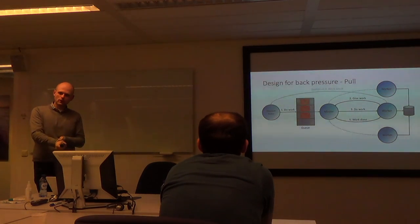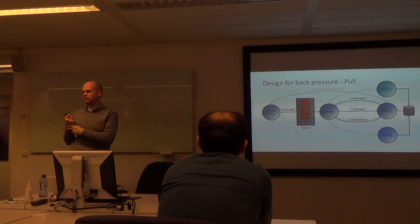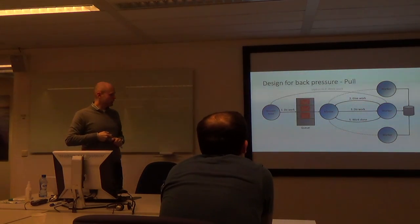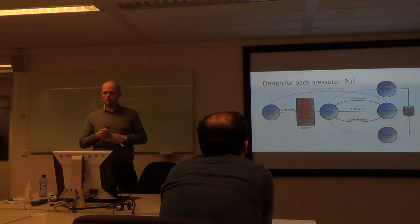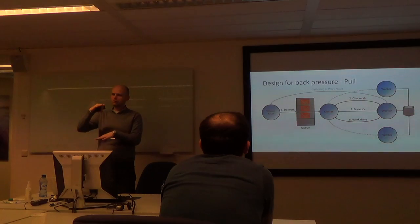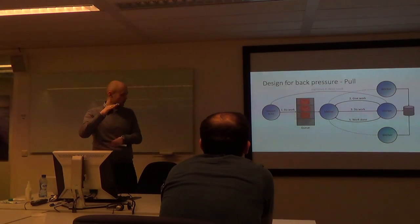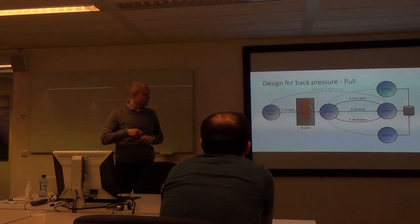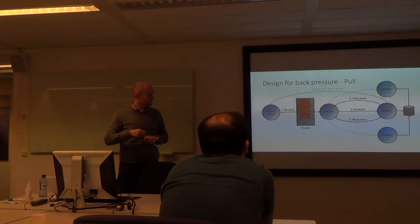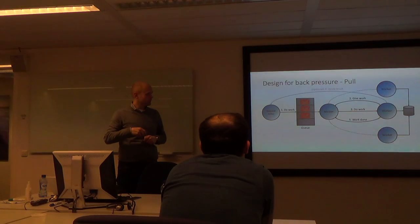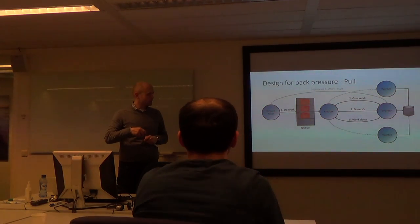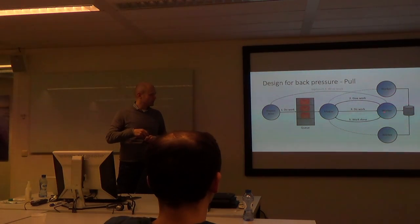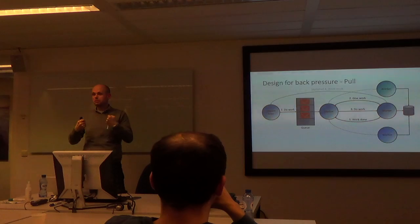This is called designing for back pressure. Instead of pushing messages into an actor's mailbox, you pull messages into your own mailbox. We have a request actor that pushes messages into a queue — this is the elastic part of our architecture. Then there's a master node that reads from the queue, and worker nodes that report to the master saying 'give me some work.' The master takes a message from the queue, pushes it to the worker. After the worker is done, it reports back and requests more work. This pattern means you can never blow up your actor system.